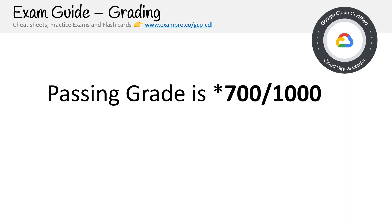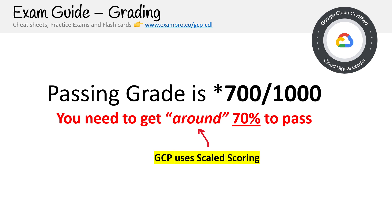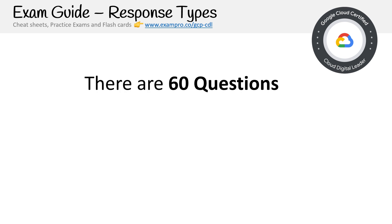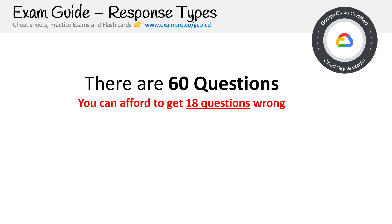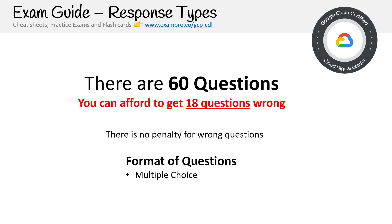In terms of grading, you just have to get 70% to pass. It is scaled, like most other exams, meaning it's not always exactly 70%, but generally that's what it will be. In terms of question type, you'll get 60 questions, so you can afford to get 18 wrong. There's no penalty for wrong answers. The format is multiple choice and multiple answer — I only saw about one multiple-answer question out of the whole exam, so it's mostly multiple choice, which is great. But again, the actual body of the questions is the hard part.